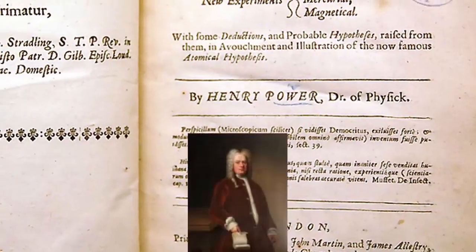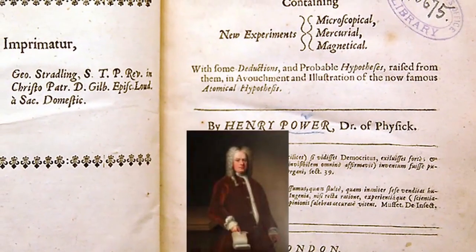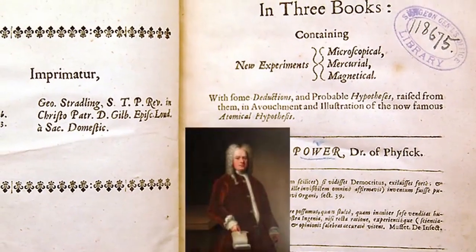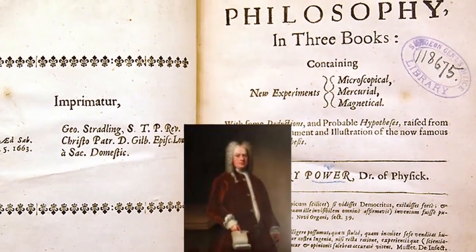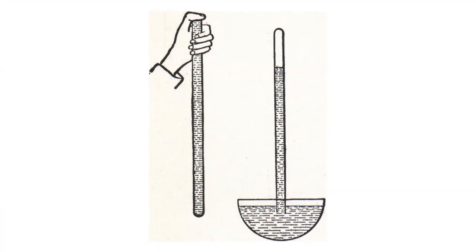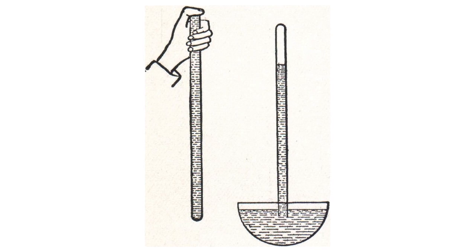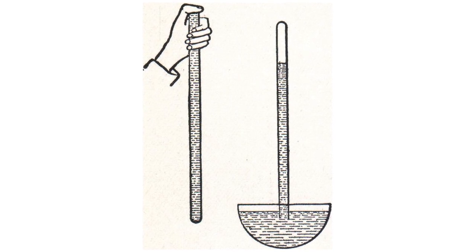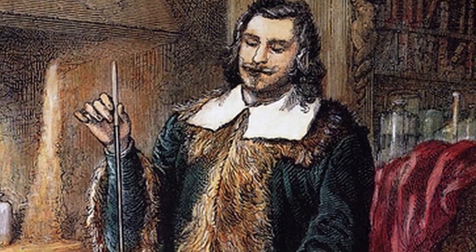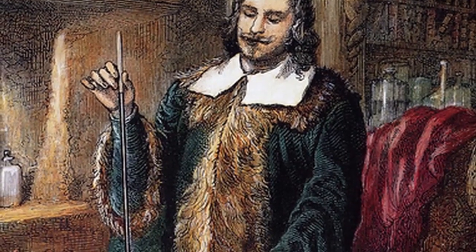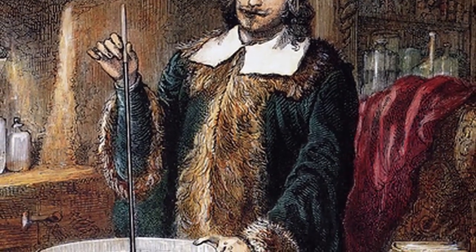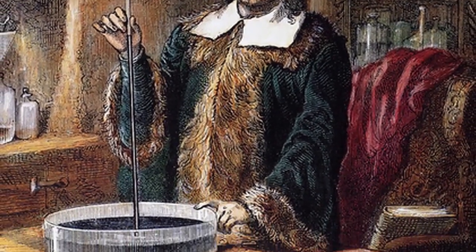In 1663, Richard Townley published results of experiments he'd conducted with Henry Power showing a roughly inverse relationship between gas pressure and volume. On April 27, 1661, they used an early barometer to measure the pressure of air at different altitudes on Pendle Hill in Lancashire, England. As a result, they recognized the relationship between the density of air and its pressure. But they were not the first to publish their findings.